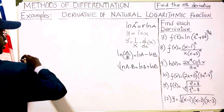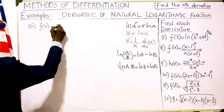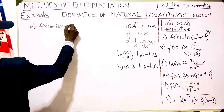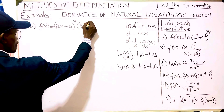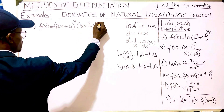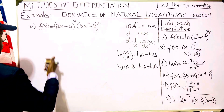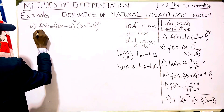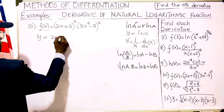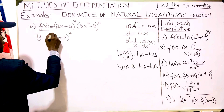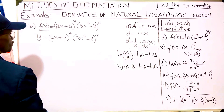Question number ten: f(x) equals (2x + 5) raised to the 7th power, times (3x to the 4th minus 8) raised to the 5th power. Again we want to bring in the natural log, take the ln of both sides, replacing f(x) with y.